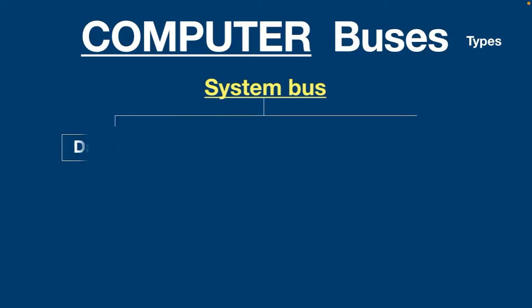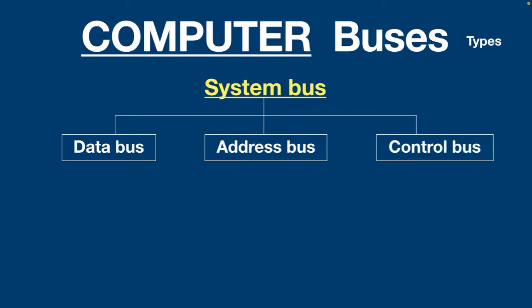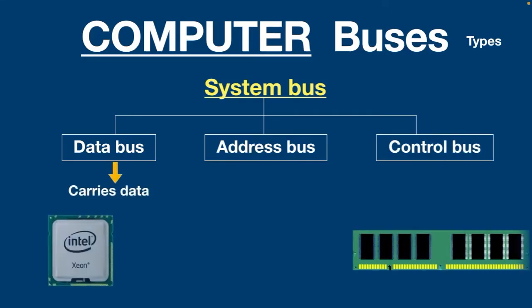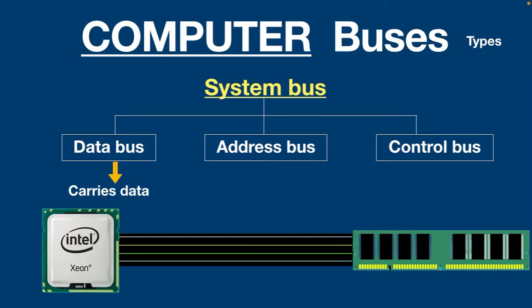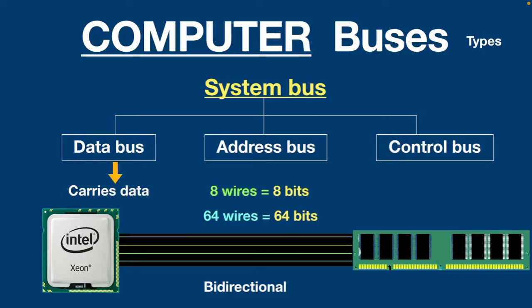The data bus carries data between the CPU and other components such as RAM, USB, printer, and so on. The data bus is bidirectional, which means data travels in both directions between the CPU and RAM. Each wire in the bus can carry one bit, so eight wires can carry eight bits at a time and 64 wires can carry 64 bits at a time. The wider the bus width, the faster the data flow, which results in better system performance.